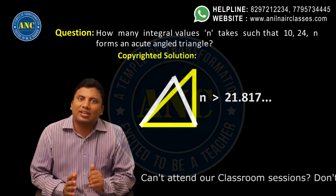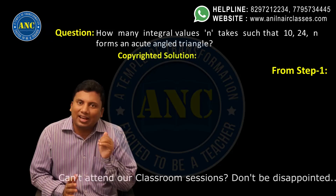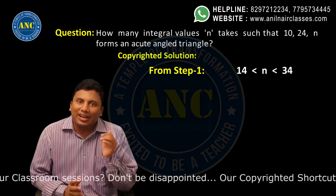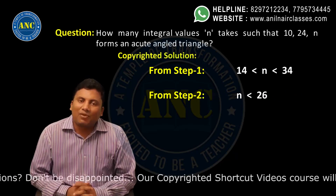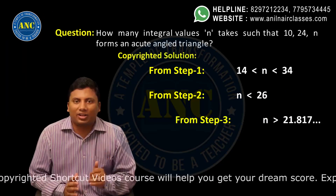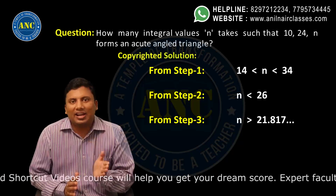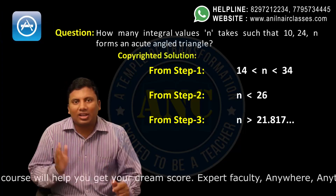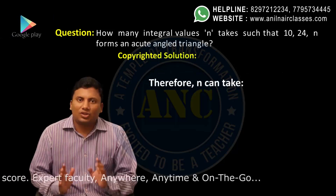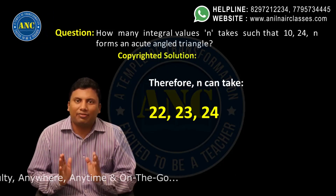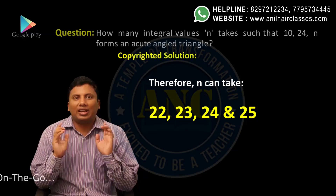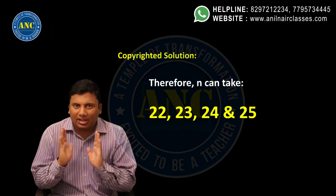Combining all three conditions: 14 < n < 34 (forms a triangle), n < 26 (n is not the largest side condition), and n > 21.something (n is not the largest side condition). The integral values that satisfy all three conditions are 22, 23, 24, and 25 — these are the values for which 10, 24, n forms an acute-angled triangle.